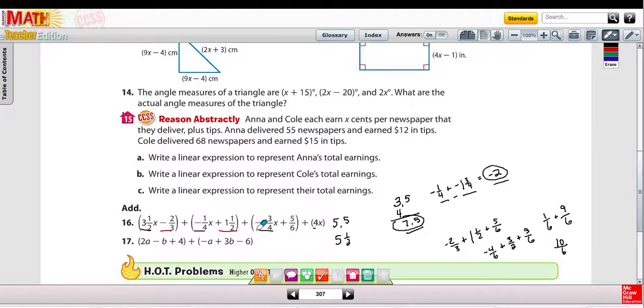So negative 2⅔, 1½, and 5/6. And there, I went ahead and found a common denominator of 6, and I showed my work over here.